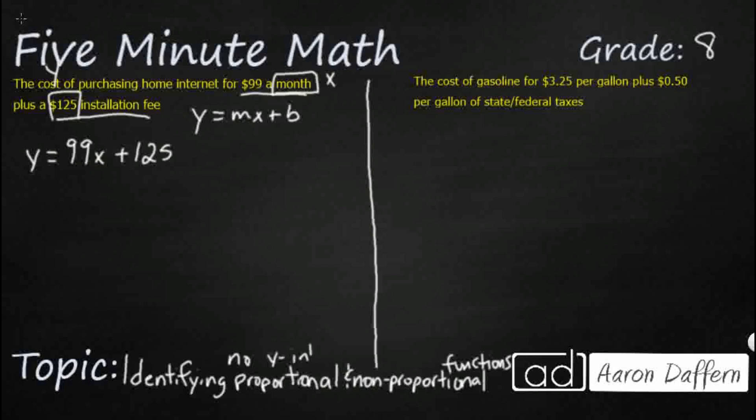It means they go through the origin, and this one actually does have a y-intercept, so this is going to be non-proportional.